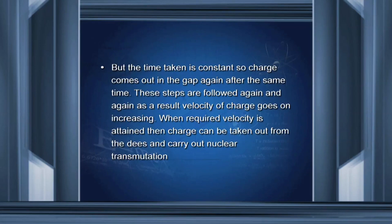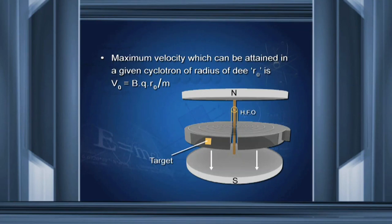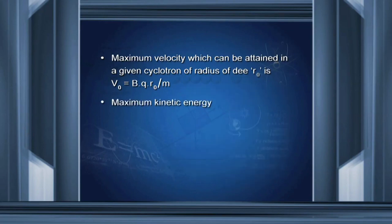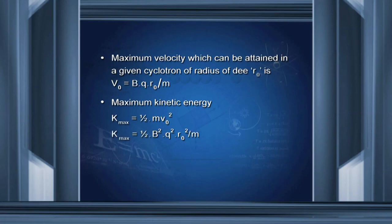The velocity of the charge increases in the gap because of the electric force. As a result, the charge enters the other D with increased velocity. Since velocity and radius are directly proportional, the charge describes a bigger radius circle. But the time taken is constant, independent of velocity and radius. So the charge comes out in the gap after the same time, the polarity reverses again, and velocity increases further. These steps are followed repeatedly, and velocity goes on increasing. When the required velocity is attained, the charge can be taken out to carry out nuclear transmutations. Maximum velocity: V naught equals BQR naught divided by M. Maximum kinetic energy: KE max equals half B squared Q squared R naught squared divided by mass.